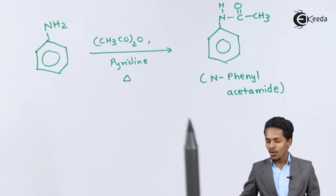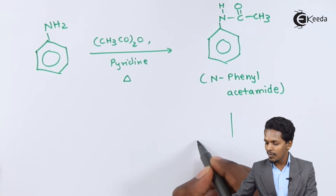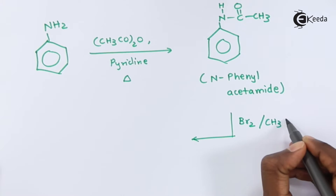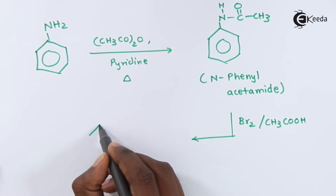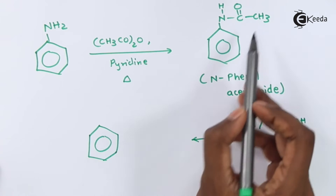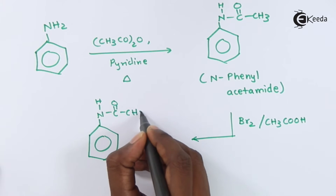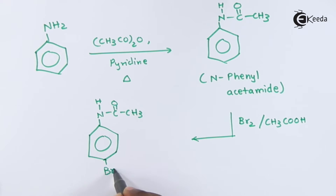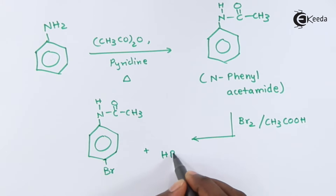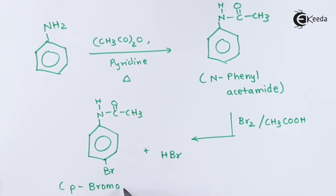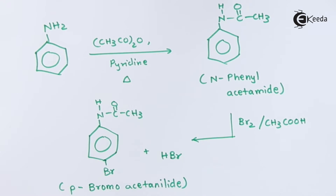Now we can carry out bromination. We introduce a bromine molecule in the presence of acetic acid (CH₃COOH). The acetamido group –NH–C(=O)–CH₃ remains intact, and one bromine atom attaches at the para position via electrophilic substitution, with HBr as a byproduct. The main product is named p-bromoacetanilide.